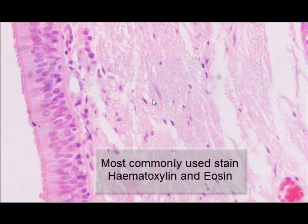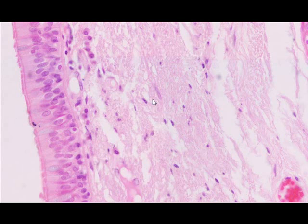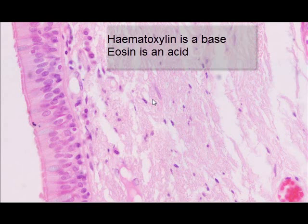Hematoxylin is a basic dye that gives a bluish color to acidic components of cells, such as nuclei. Any component of a cell that has a pH of less than 7 will have a bluish tint under the influence of this dye. A pH of less than 7 represents that a liquid is acidic.